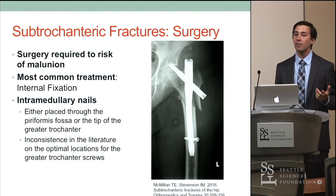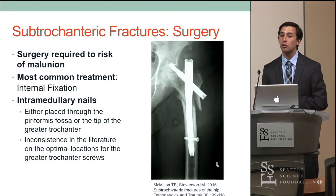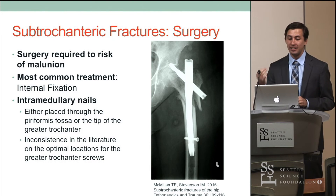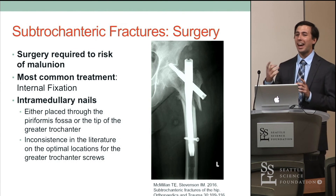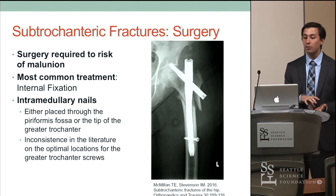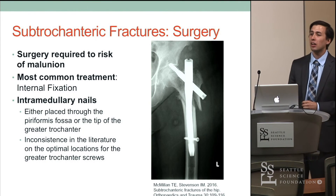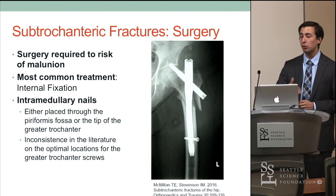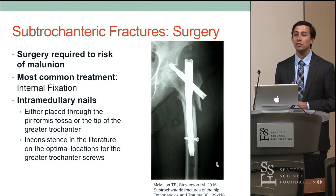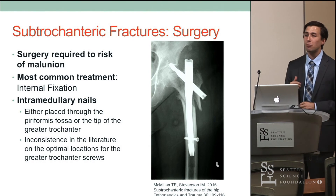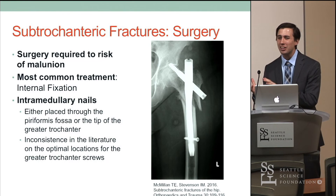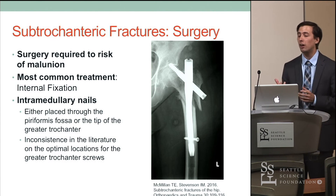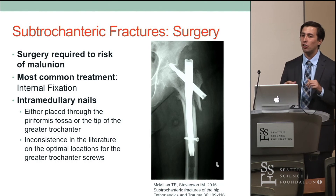Most subtrochanteric fractures require surgery due to the risk of malunion, and fast action is needed given the opposing muscle forces. Internal fixation using intramedullary nails is used, inserted either at the piriformis fossa or the tip of the greater trochanter. Literature debates the optimal entry point: one cadaver study showed the tip of the greater trochanter is always easiest, but clinical studies show variability — sometimes slightly medial or lateral — suggesting that CT scanning enhances the ability to customize the approach for each patient. The jury is still out on which approach is truly best.